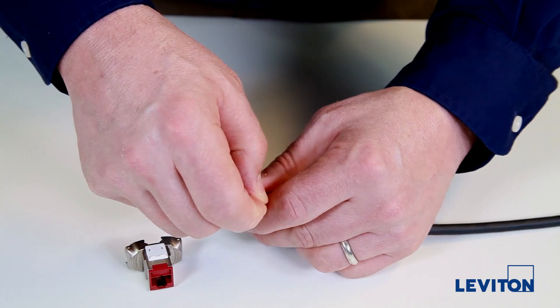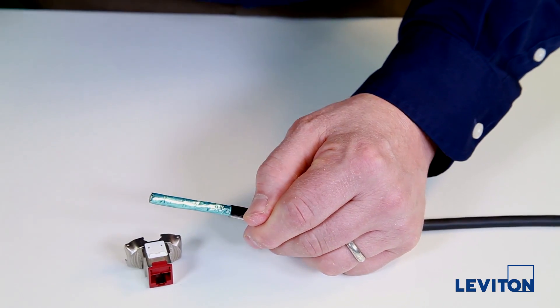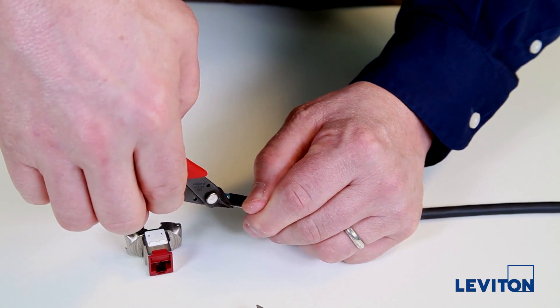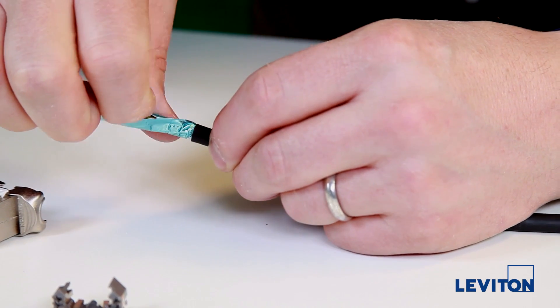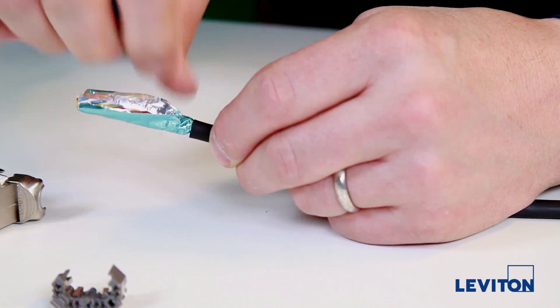Pull back the strip string and cut it off with a flush cutter. Now open the foil and pull it back along the cable jacket metal side out.